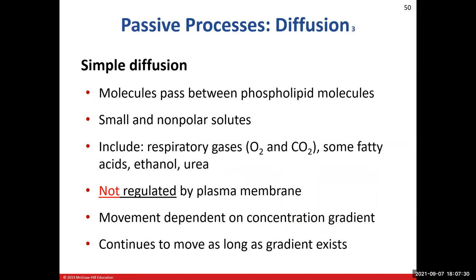Diffusion is influenced by a couple of things: one, the temperature of the environment — if we increase the temperature we increase the movement of those particles; and two, the steepness of the concentration gradient. If there's a large difference across the plasma membrane things move quicker, and as that difference declines, things start to slow down.